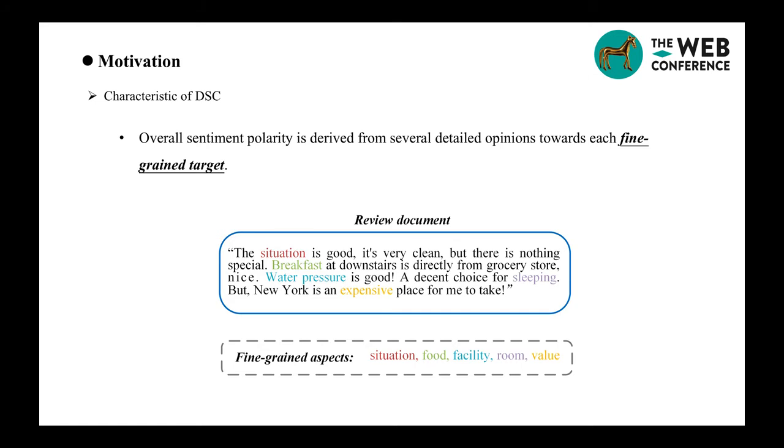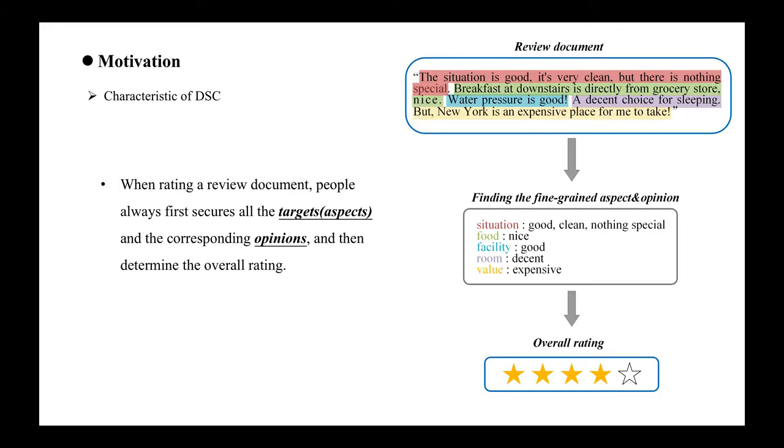Generally, the overall sentiment polarity of one document text is derived from several detailed opinions towards each fine-grained target. For example, in this document we have totally five aspects such as location, food, facility, room, and value. When people read a review document, they always first seek the targets or aspects and the corresponding opinions, and then determine the overall rating.